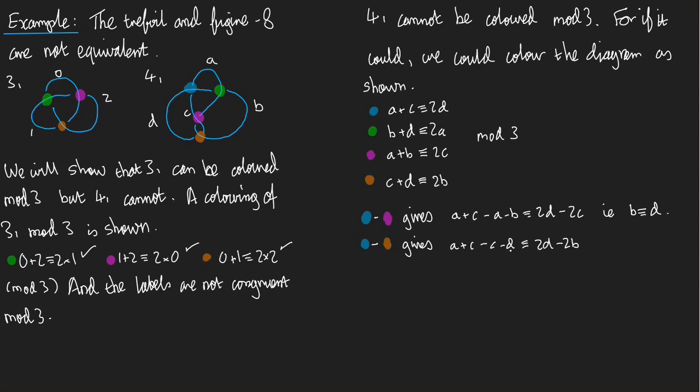and the minus D, move it over here, we get 3D which is 0. So we get A congruent to minus 2B but minus 2B is just B mod 3. So we get A is congruent to B.